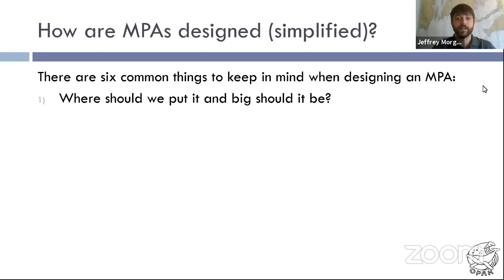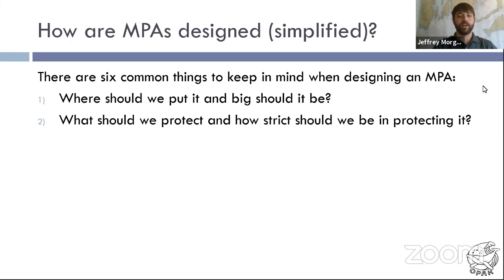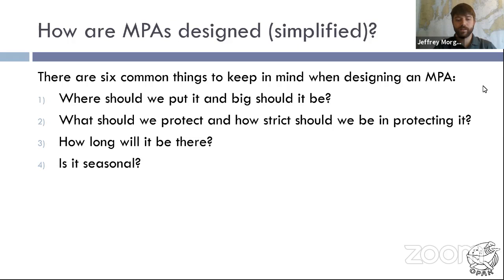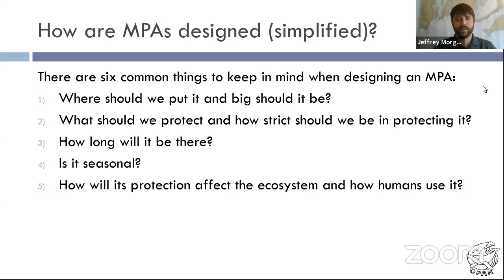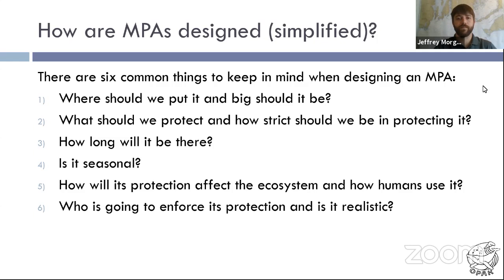We want to think about what we're trying to protect and how strict we want to be in the regulations. Believe it or not, we do need to think about how long that marine protected area is going to be there — we are in an evolving climate. Is it going to be a seasonal marine protected area or is it going to be permanent? How is this new protection going to impact us and the species that live there? And who's going to enforce this protection? Is what we're trying to set up realistic — can it actually be implemented and followed?